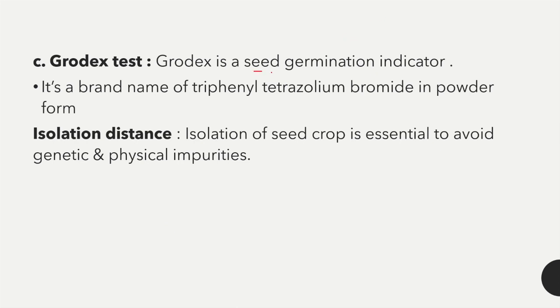Third is the Grodex test — Grodex is a seed germination indicator and is the brand name of triphenyl tetrazolium bromide in powder form. The next topic is isolation distance — essential to avoid genetic and physical impurity in seed crops.